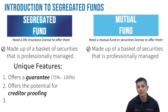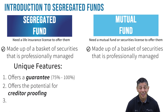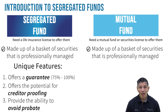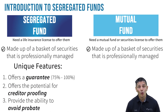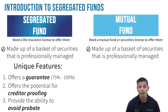Number two, since segregated funds are an insurance product, they offer the possibility of creditor protection. Under certain circumstances, your creditors may have no claim on your segregated fund investments, even if you're filing for bankruptcy. Number three, they provide the ability to avoid probate fees, which is a fee that generally applies to assets transferred via one's last will and testament. Since a segregated fund allows the naming of a beneficiary, the funds go directly to the beneficiary upon the annuitant's death, thereby avoiding probate fees.